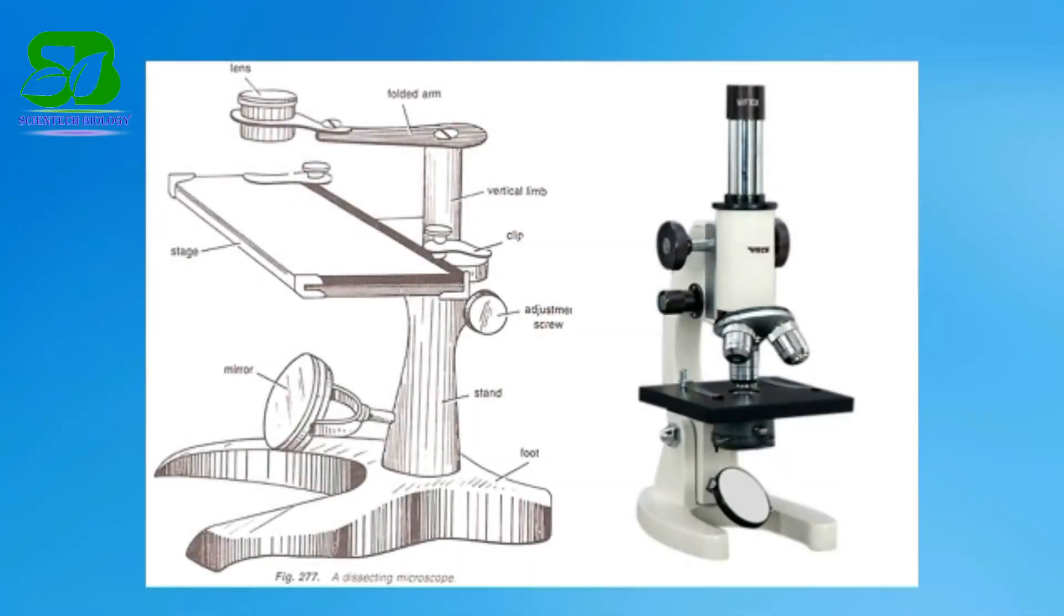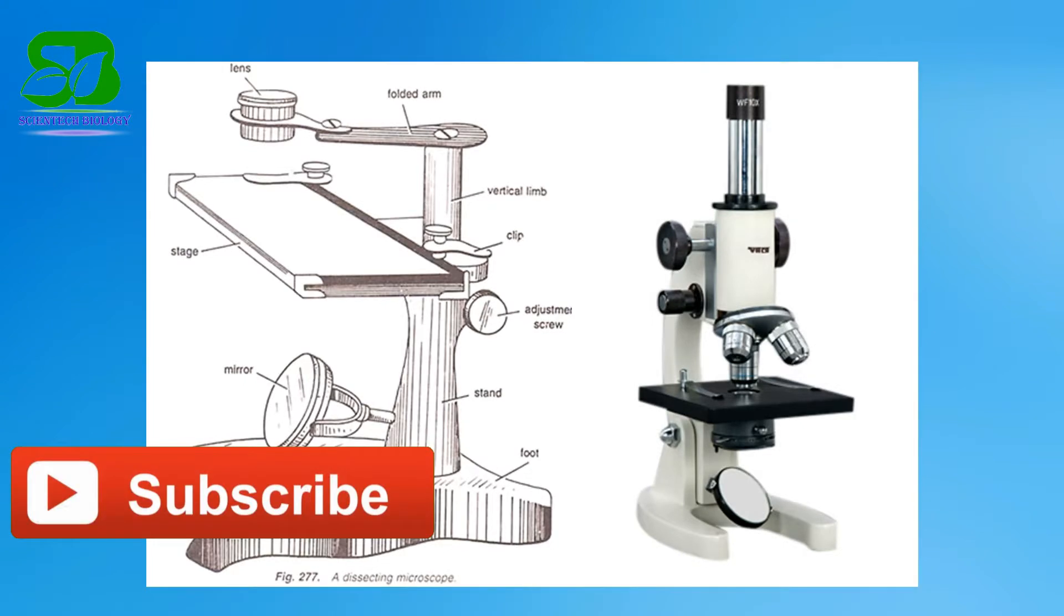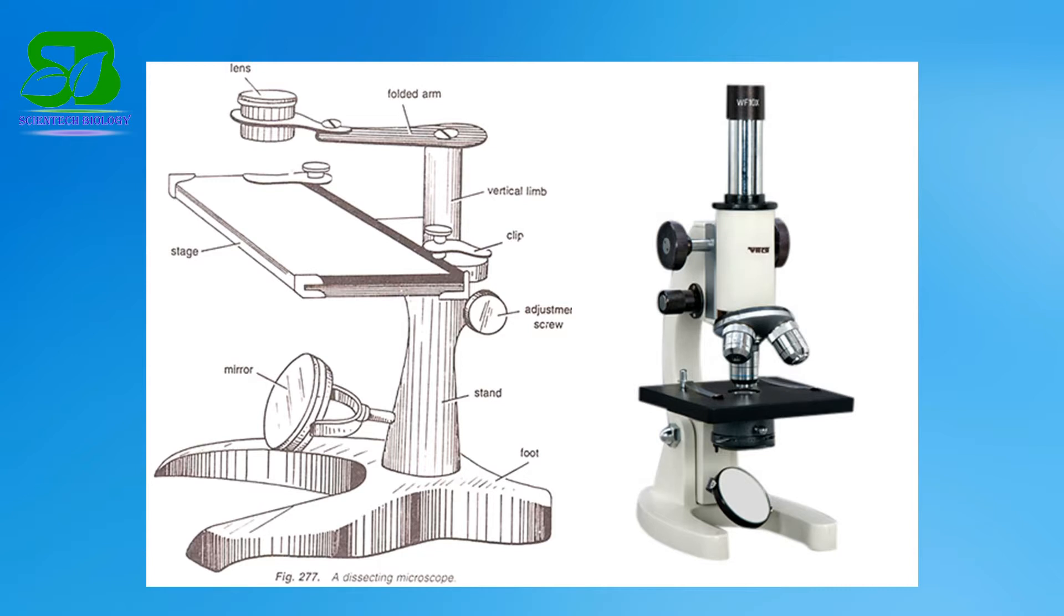A microscope is an instrument to get an enlargement of the object. An optical microscope may be simple or compound. The simple microscope has only one lens system and is used in field studies, whereas the compound microscope has two lens systems.